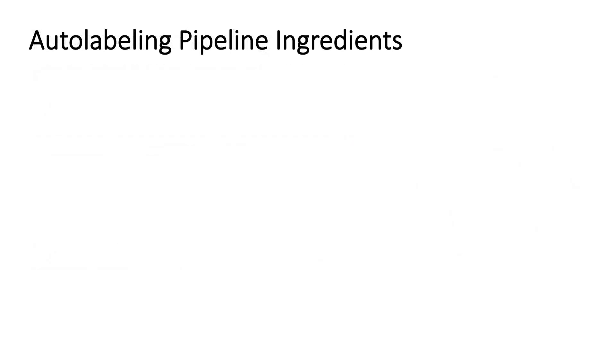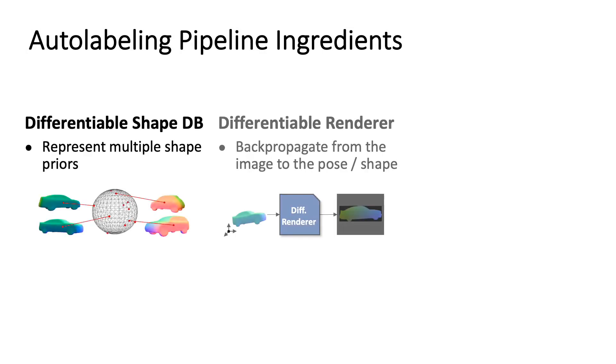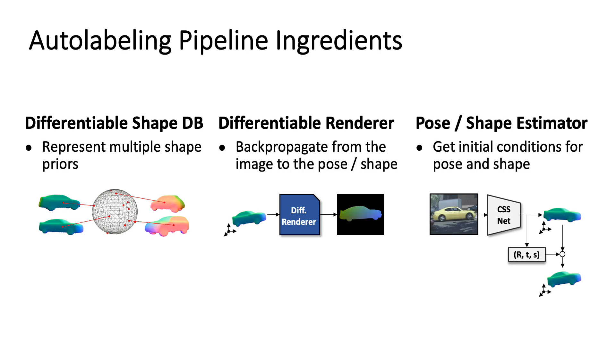Our pipeline consists of three major components: the differentiable database of shape priors to represent possible car variations, a custom differentiable renderer that allows reasoning about the 3D appearance from a 2D image, and a pose and shape estimator for initialization of the optimization process.